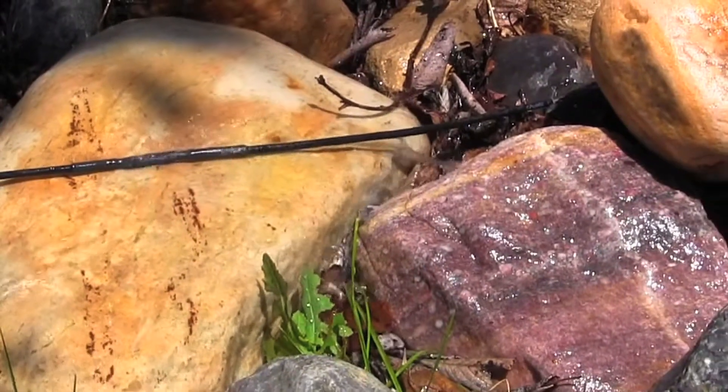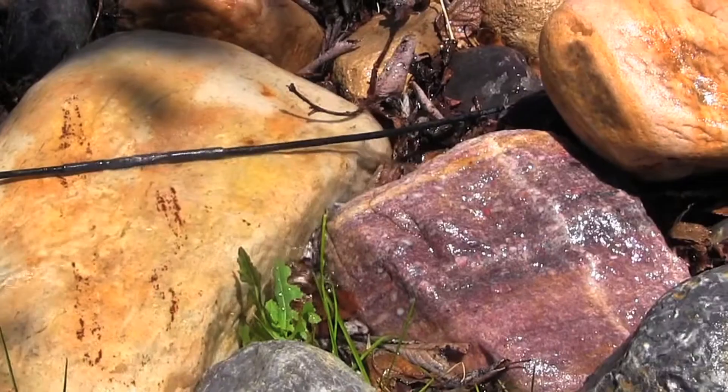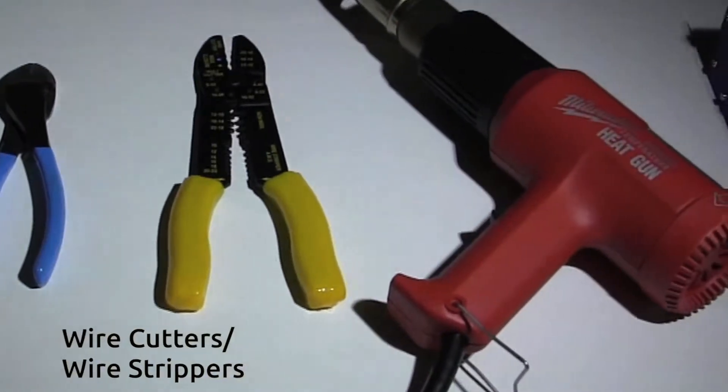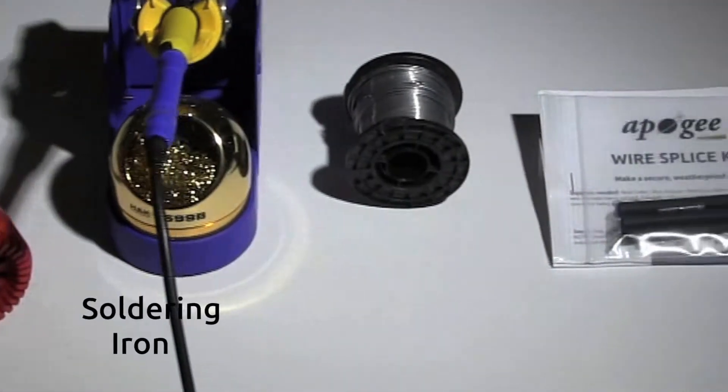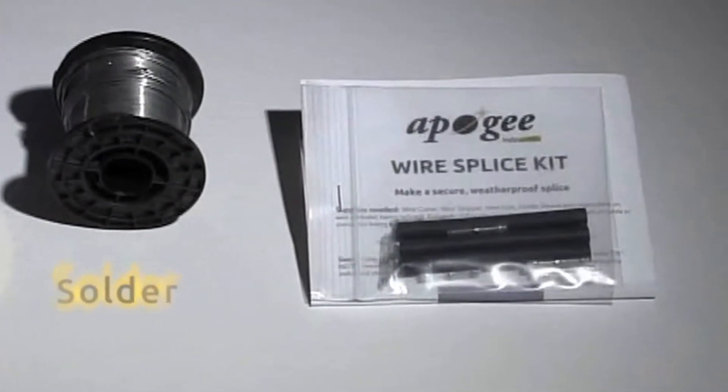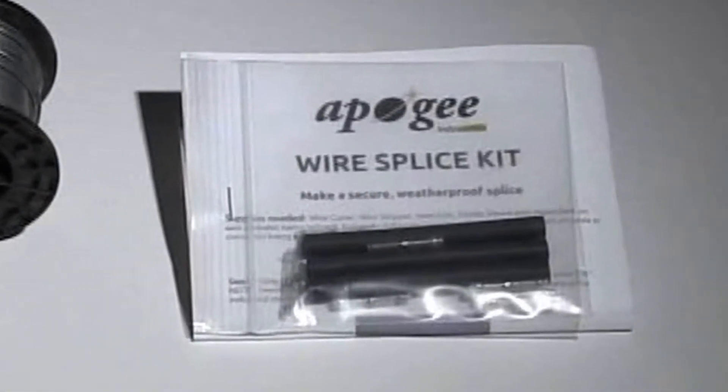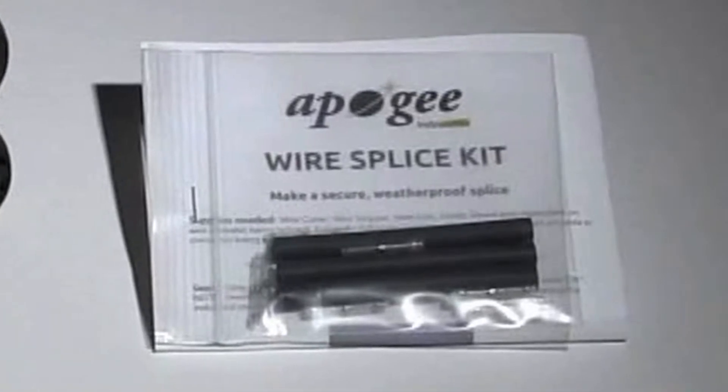Before you begin, please gather these supplies: wire cutters, wire strippers, a heat gun, a soldering iron and solder, and an Apogee wire splice kit, which includes solder sleeves and polyolefin adhesive lined heat shrink.